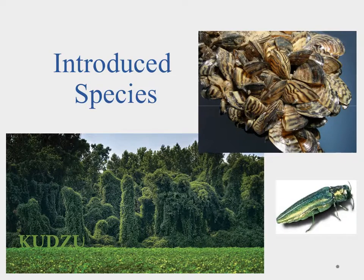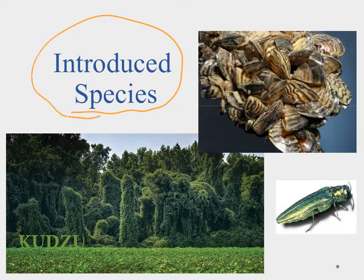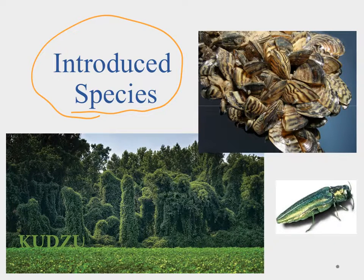Part of the human impact involves the idea of introduced species — we bring species into places where they weren't naturally found. When we do so, one of the things we notice is that where a species is naturally found, there's a predator that keeps that population in check. But when we put it into someplace new without that predator, those populations are able to bloom and go crazy.